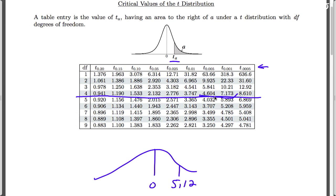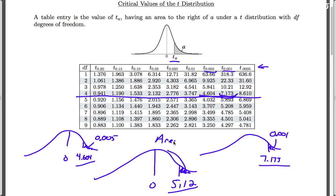The area to the right of 4.604 is 0.005, and the area to the right of 7.173 is 0.001. Now 5.12 falls in between 4.604 and 7.173, so it's only logical that this area here, our area that we seek, is less than 0.005 but greater than 0.001.